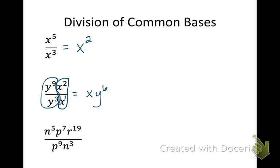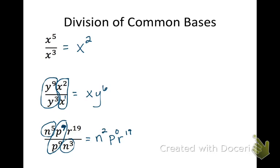For the next problem with n's, p's, and r's: looking at n's first — n to the 5th over n to the 3rd — 5 minus 3 gives n squared. For the p's: p to the 9th over p to the 9th — 9 minus 9 gives p to the 0. For r, there's no other r to combine with, so we keep r to the 19th. Since p to the 0 equals 1, it cancels out, and our final answer is n squared times r to the 19th.